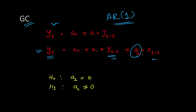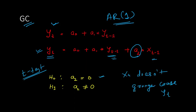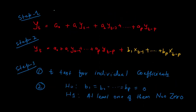To check significance, we do a t-test. The null hypothesis is that A2 = 0, meaning Xt does not Granger cause Yt. The alternative hypothesis is that A2 ≠ 0, meaning Xt Granger causes Yt. Those are the key hypotheses for the Granger causality test.